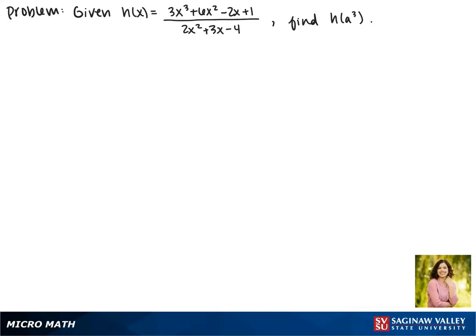Given that h of x equals 3x cubed plus 6x squared minus 2x plus 1, all over 2x squared plus 3x minus 4, find h of a cubed.